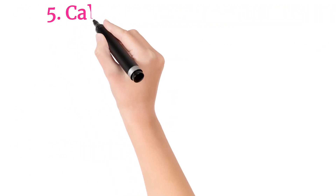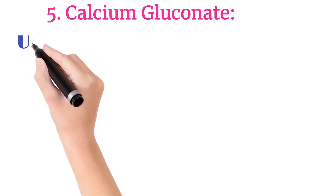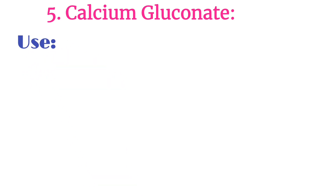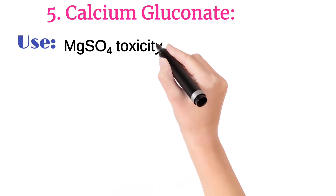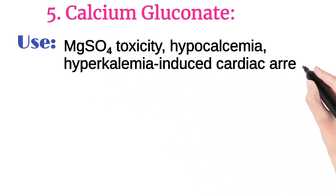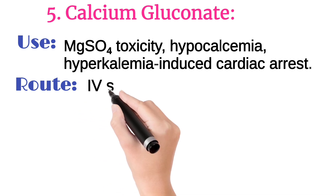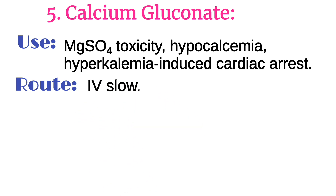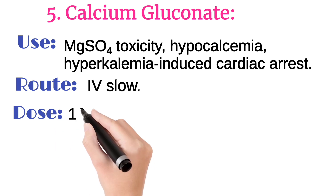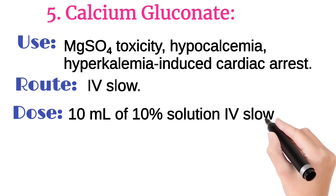The fifth one is calcium gluconate. It is used in magnesium sulfate toxicity, hypocalcemia, and hypokalemia-induced cardiac arrest. It is injected intravenously slowly. Its usual dose is 10 ml of 10% solution IV slowly.